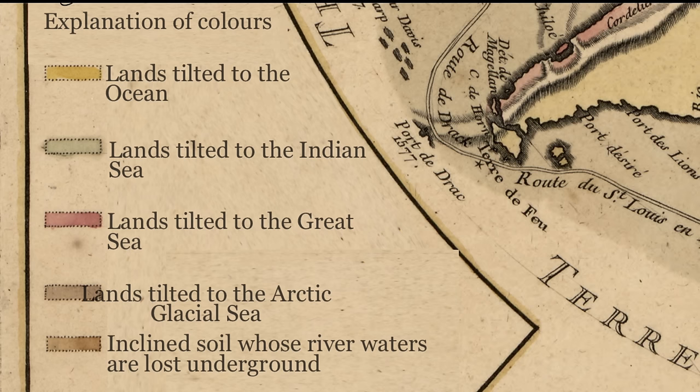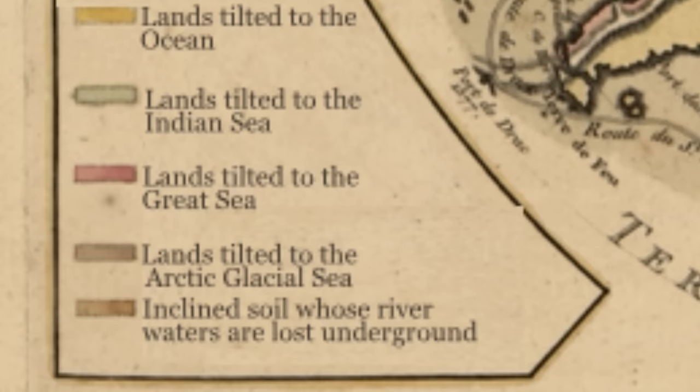Explanation of colors: lands tilted to the sea, lands tilted to the Indian Sea or Indian Ocean, lands tilted to the large sea or the great ocean, lands tilted to the Arctic glacial ocean, and inclined soil whose river waters are lost underground.